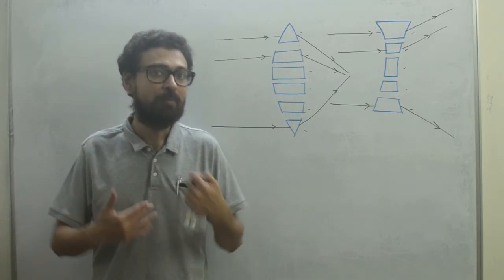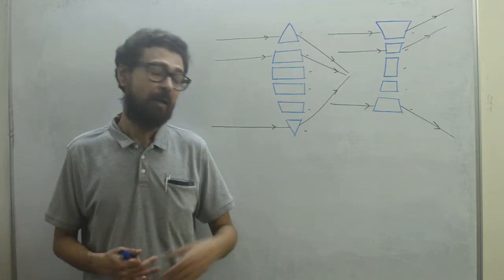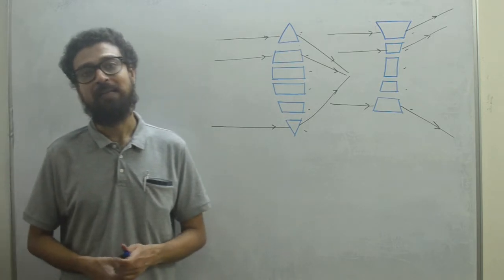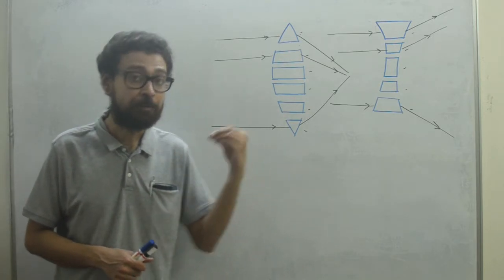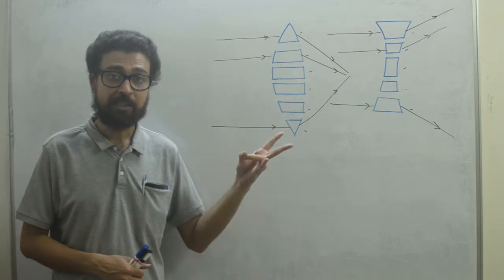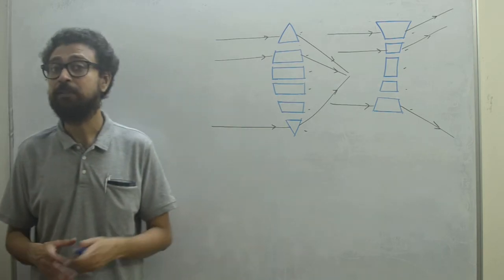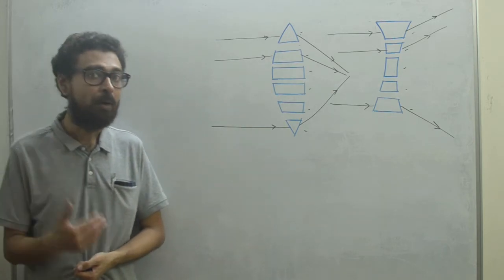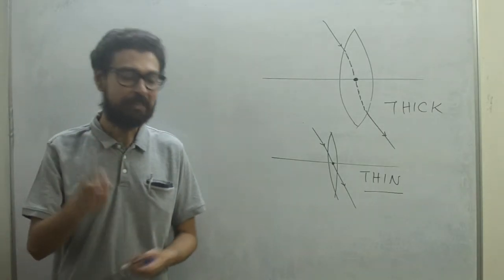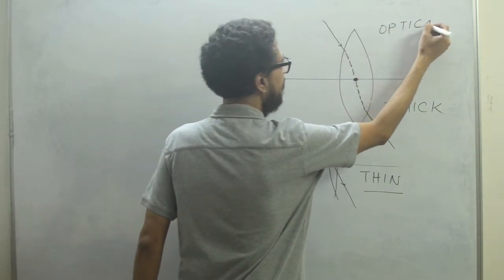We will come to know more about this topic later. Right now we will go into some basic definitions of the lens. We already know three things: center of curvature, radius of curvature, and of course the principal axis. But there are other things which we should know, and now we will come up with those. Let us define what is called the optical center.